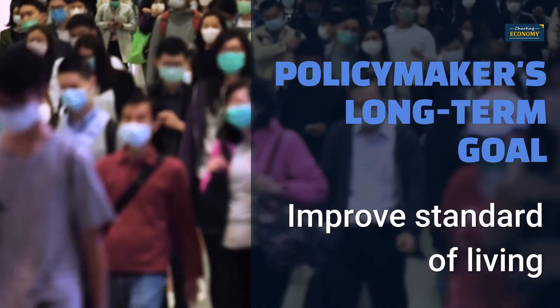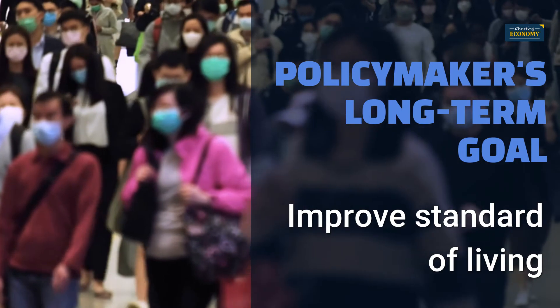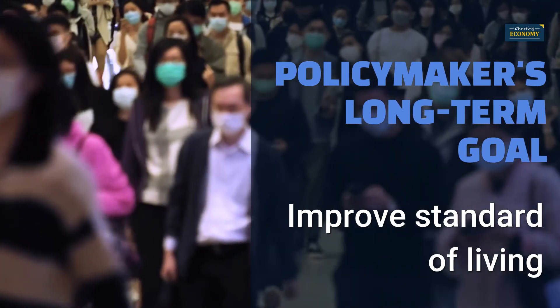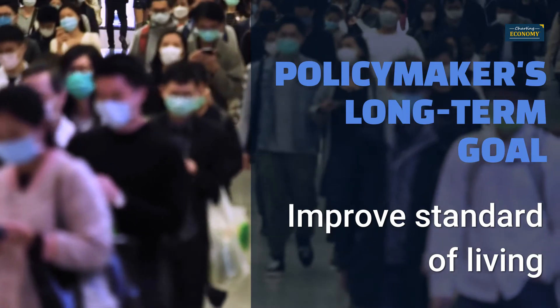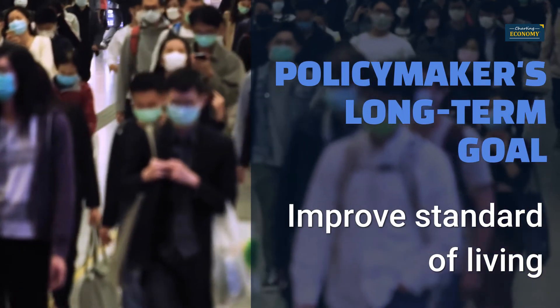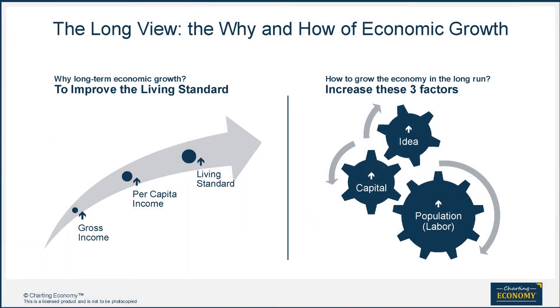Economic policy makers' long-term goal is to improve the country's standard of living and its population's well-being. Without economic growth, the standard of living does not improve, as had been the case in most countries before the Industrial Revolution. So, how do you make the economy grow in the long run? A simple formula for long-term economic growth dictates that you have to increase these three factors: labor, capital, and ideas. That's the job of policy makers. As spectators, we can ask questions that give us clues to assess those three factors and the results on people's well-being.